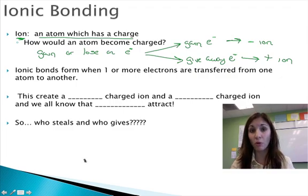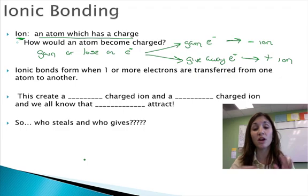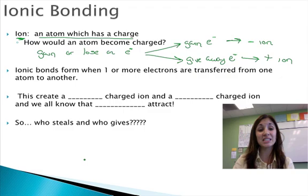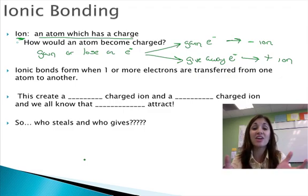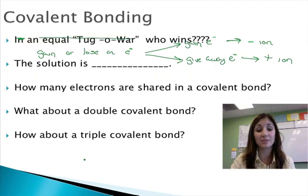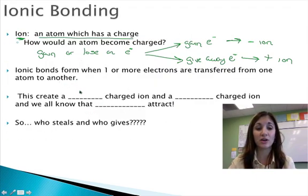So an ionic bond forms due to these rules of attraction. When one or more electrons is transferred and we create an ion, now we've got a positive ion and a negative ion, and they're going to be attracted to each other because opposites attract.